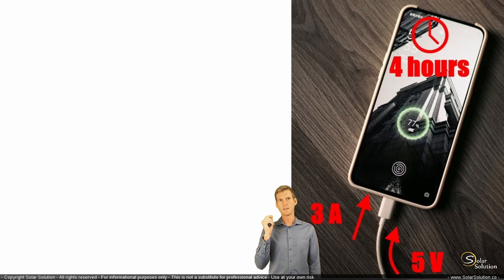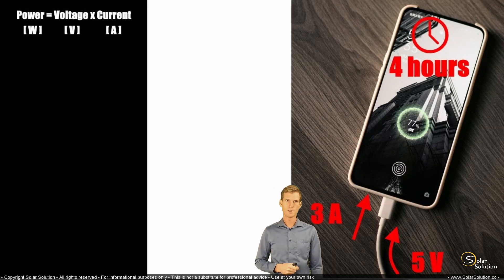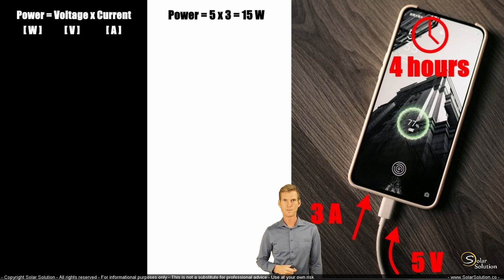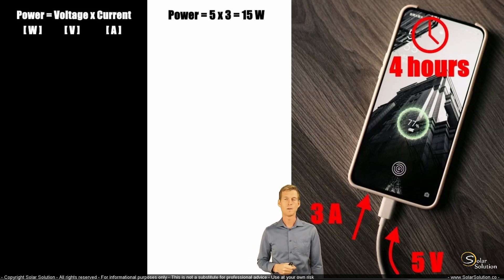We know that we can calculate the power by multiplying the voltage times the current. Voltage times the current is power, so we take five times three. Five volts times three amps is 15 watts. So we know that we are providing a total power towards your phone of 15 watts.